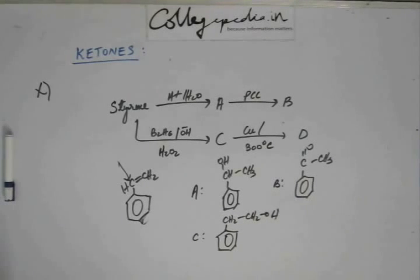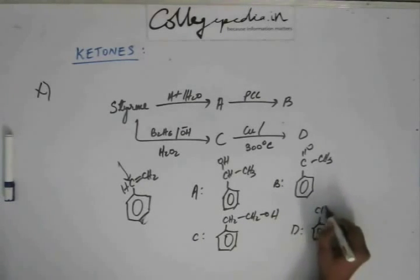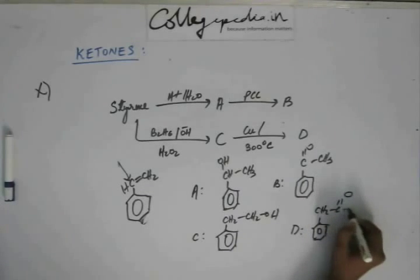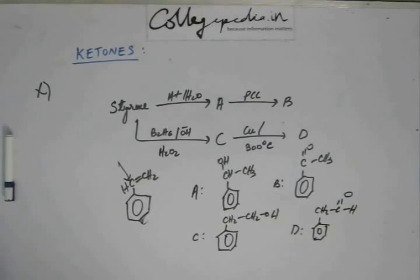On C, again you're adding copper. Actually, you are passing C through a copper tube heated at 573 Kelvin, and this is the last reaction that we have studied. It shouldn't be a problem for you to find out what D is. What will happen here is dehydrogenation—hydrogen will be removed and C double bond O will be formed. So this time, the product will be an aldehyde and not a ketone. This is what D is.